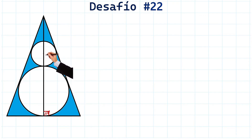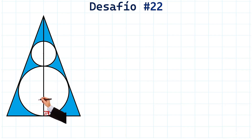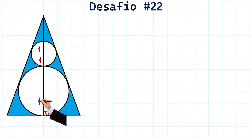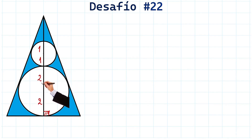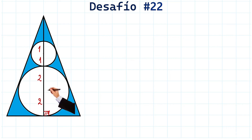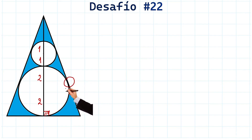The radius of the small circle is 1, so we have 1 on each side. The radius of the large circle is 2, appearing at multiple tangent points around it. Now let's draw lines from the center of each circle to the tangential point between the circle and the side of the triangle.